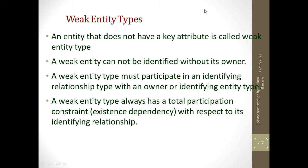Let us understand about weak entity types. An entity that does not have a key attribute is called a weak entity type. There is no key attribute present. They are always identified with their owner, so there will be a strong entity set which is associated with this weak entity set, and they participate in an identifying relationship.